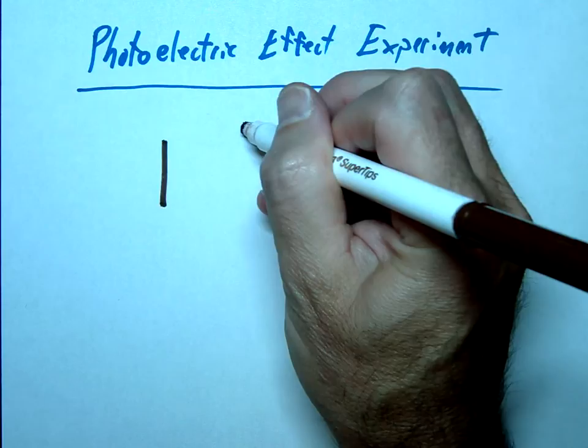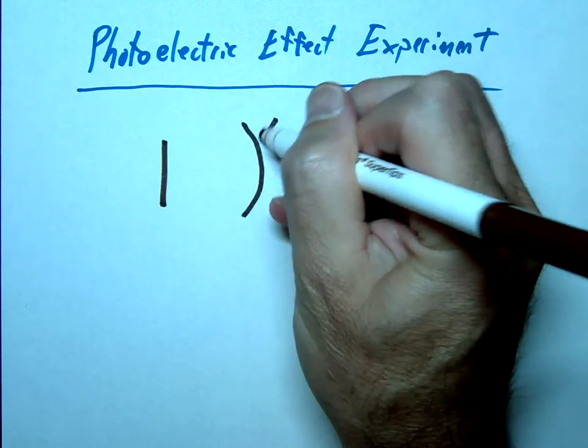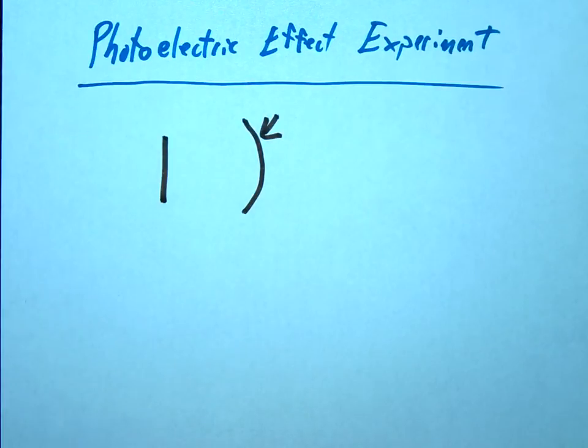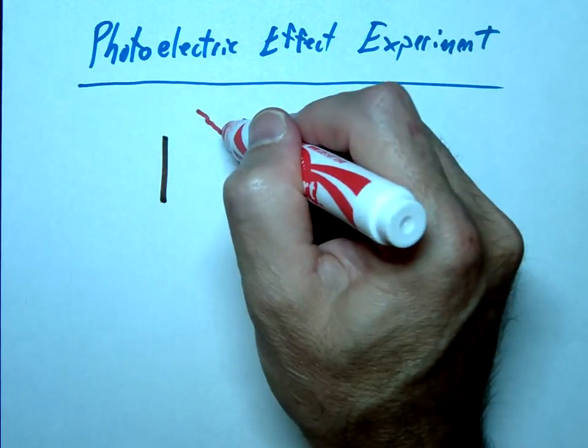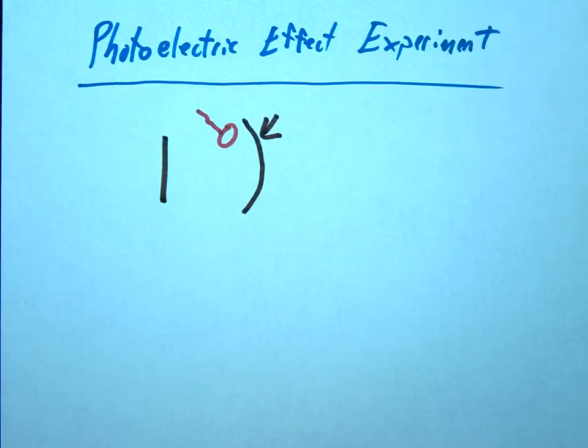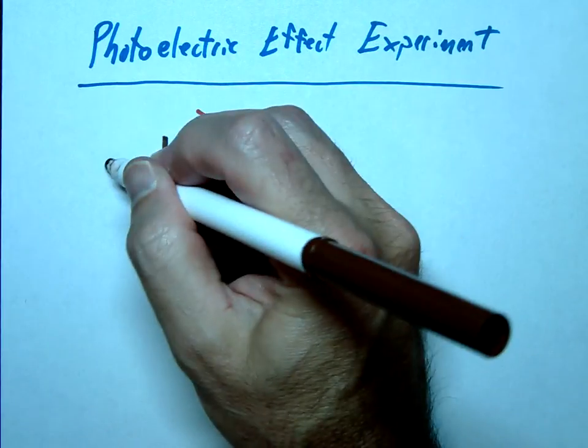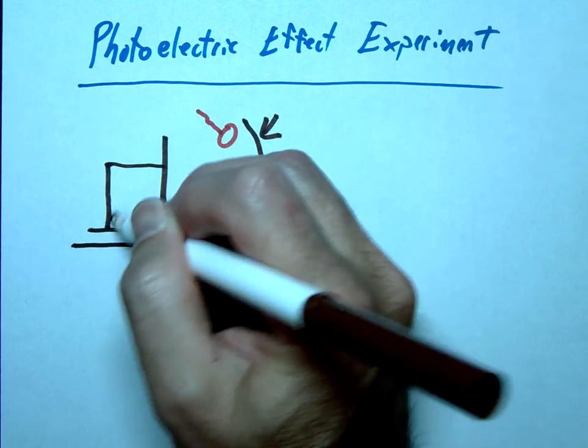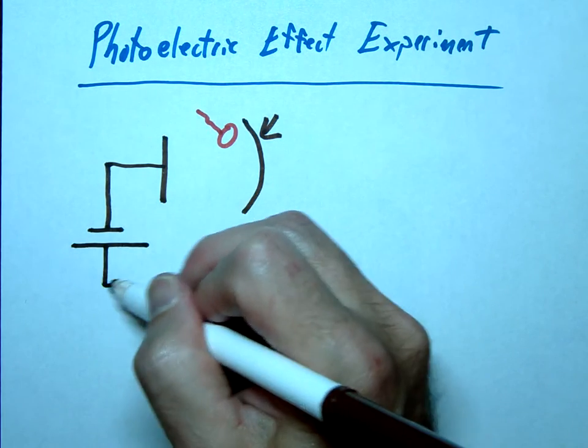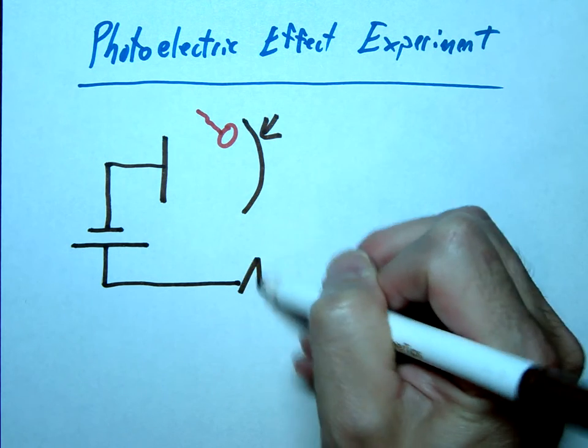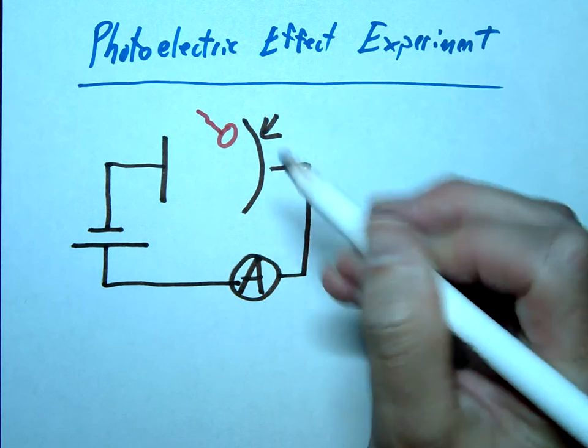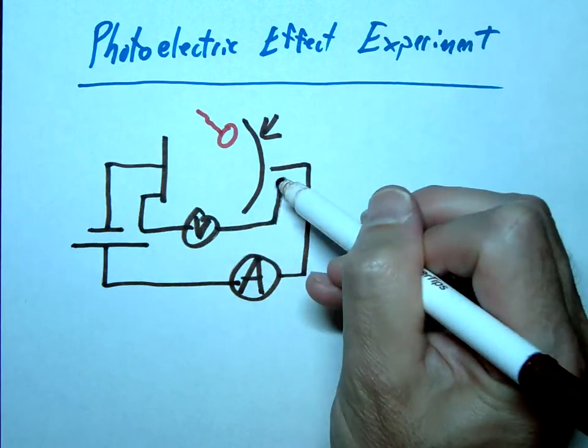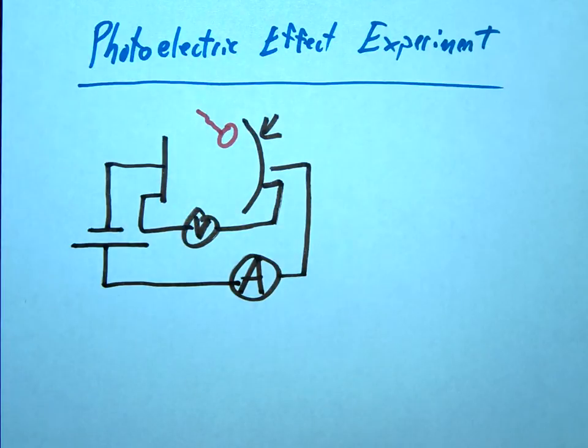You're going to have two metal plates. This one is going to be the actual photoelectric surface that we're going to be sending photons onto. For example, maybe we send some red light onto the surface. We're going to hook this up to a battery or some kind of voltage source, and we're actually going to make this negative on this side and positive on the other side. We're going to have an ammeter in here to measure current, and we can put a voltage source across this. So this is essentially what our setup is going to look like.